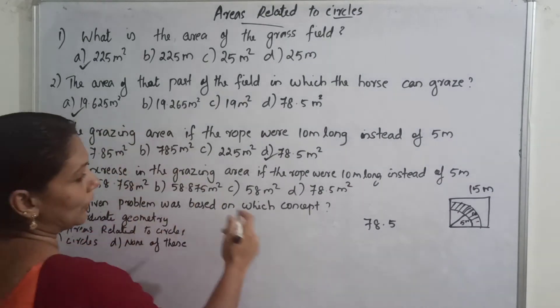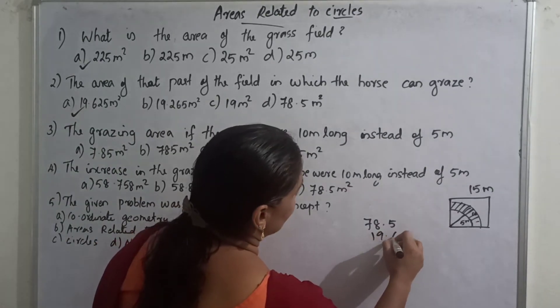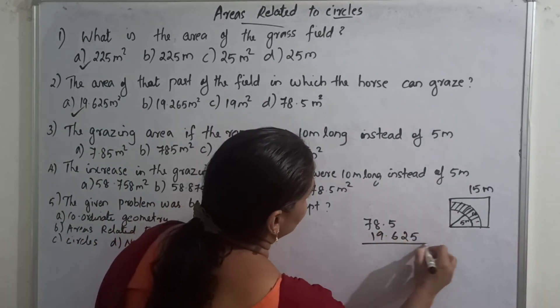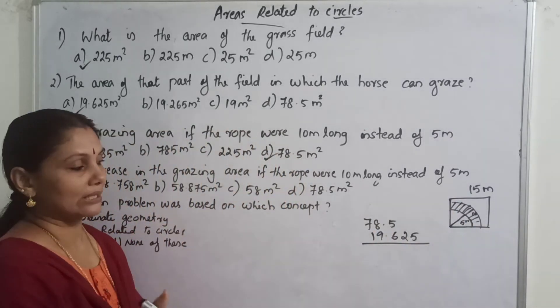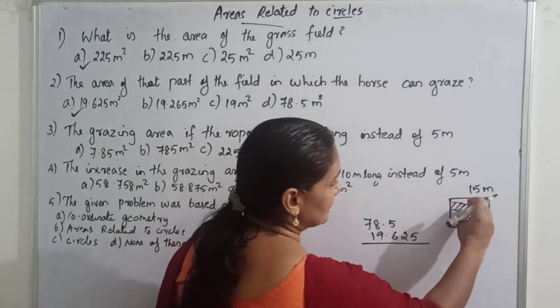We divide it up to 90.625 minus area. This is the two minus area. How much area increase? How much area can the horse graze?